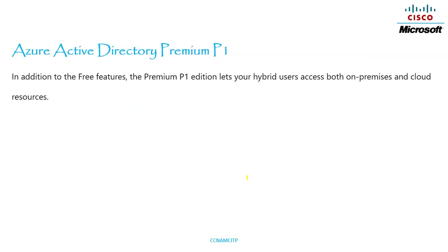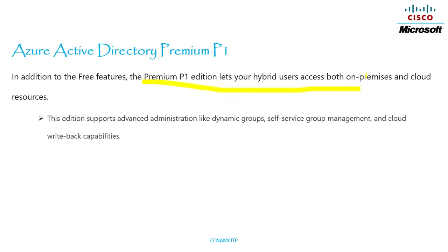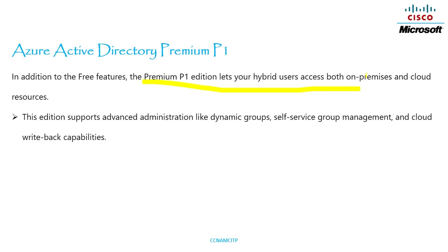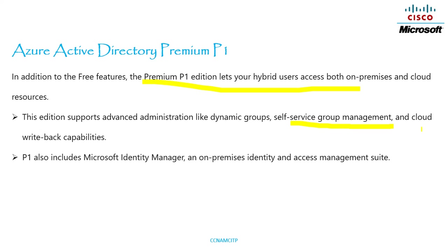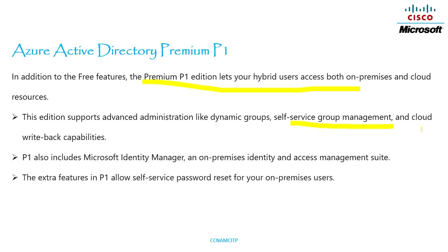Azure Active Directory Premium 1 — in addition to the Free features, the Premium 1 edition lets your hybrid users access both on-premises and cloud resources. This edition supports advanced administration like dynamic groups, self-service group management, and cloud write-back capabilities. P1 also includes Microsoft Identity Manager, an on-premises identity and access management suite, and allows self-service password reset for on-premises users.